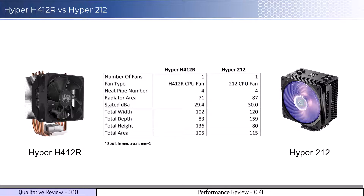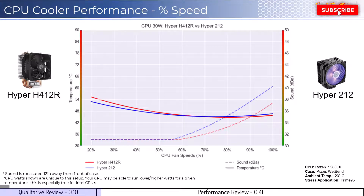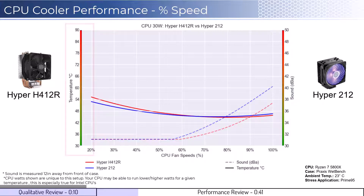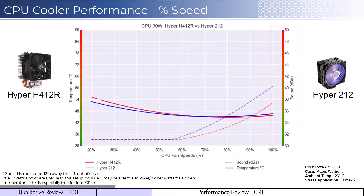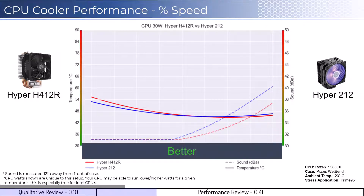Let's dig into the performance. We're going to cover two sets of graphs: one normalized by percent speeds and the second normalized by noise levels. Note that these graphs are created using machine learning models to help break down the performance using over a million data points in an open case. This means that performance may differ depending on your case's airflow and your CPU. To orient you to the graph, the left side shows temperatures corresponding to the solid lines, with the right side showing noise levels represented by the dashed lines. As a general rule, lower is always better for the data shown.